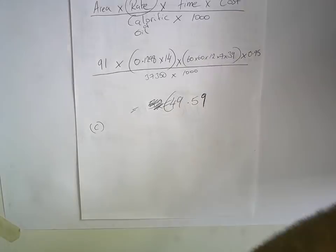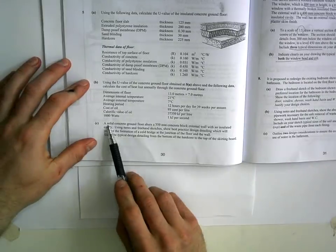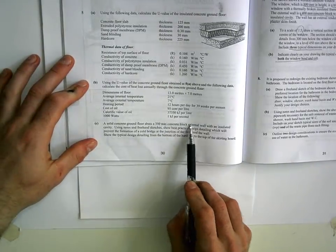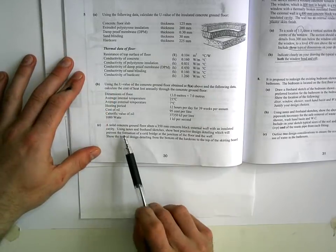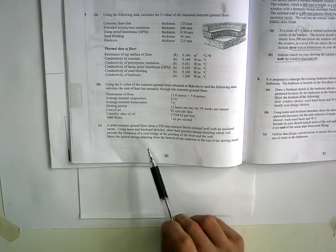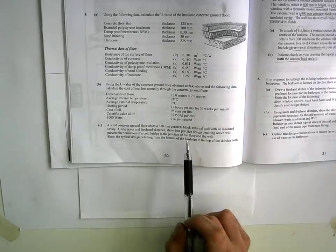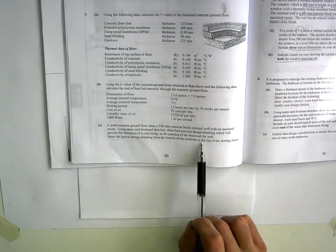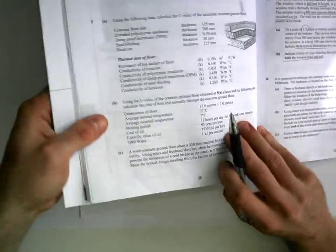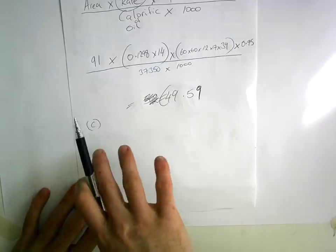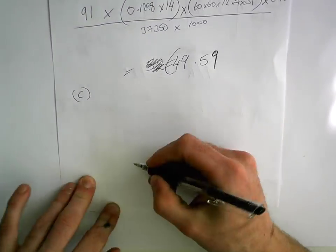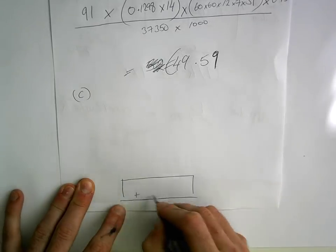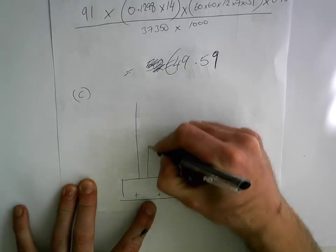Part C asks: a solid concrete ground floor abuts a 350mm concrete block external wall — meaning the floor and wall are touching, which is standard. Using notes and freehand sketches, show best practice design detailing to prevent a cold bridge at the junction, from the bottom of the hardcore to the top of the skirting board. A cold bridge means you have a direct link between outside and inside with no break — insulation or another means must interrupt it. Start by sketching the foundation, reinforce with steel rods, build up the block wall with outer and inner leaf.